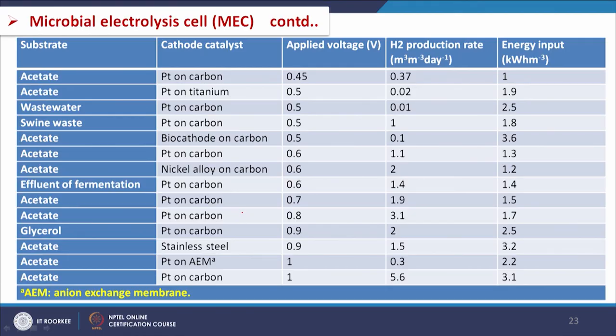Good amount of research is going on: different types of cathode catalysts have been used, different applied voltages have been investigated, different hydrogen production rates have been achieved, and energy input is varied. These methods are used for the production of energy components through the treatment of wastewater. It is considered an advanced stage process, and since microbes are used, these fall under the secondary treatment category.